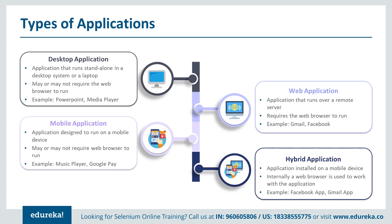A desktop application is one installed on a standalone system — a particular desktop or laptop — and is dedicated to that system alone. Examples include PowerPoint, media players, and Office software. Once installed on a particular machine, you can only use it on that machine. If you need to use it on a different machine, you have to reinstall it. These are also called standalone applications.